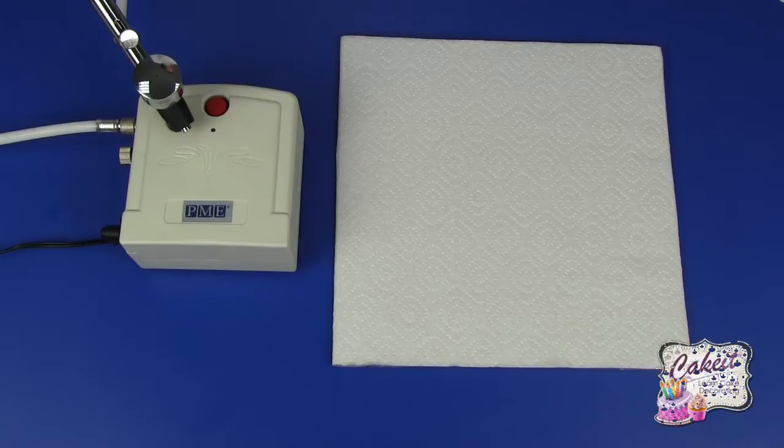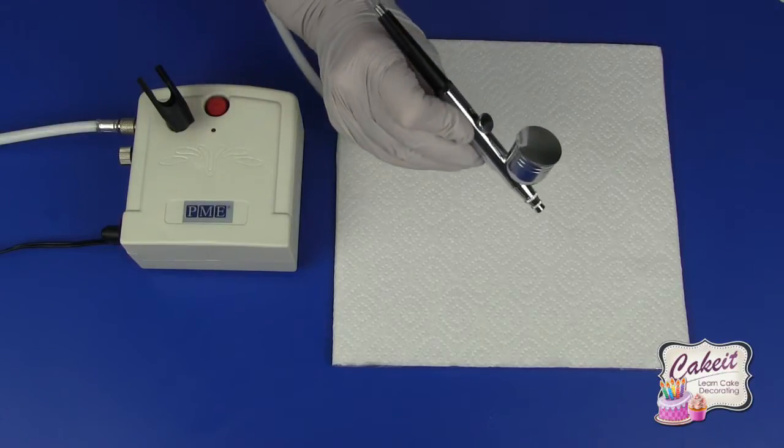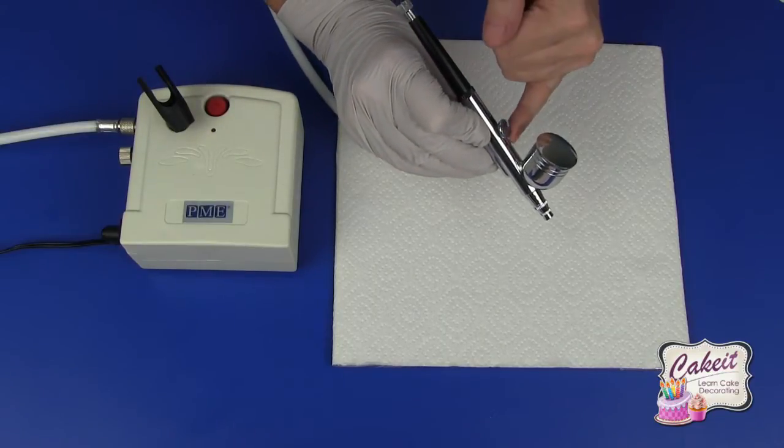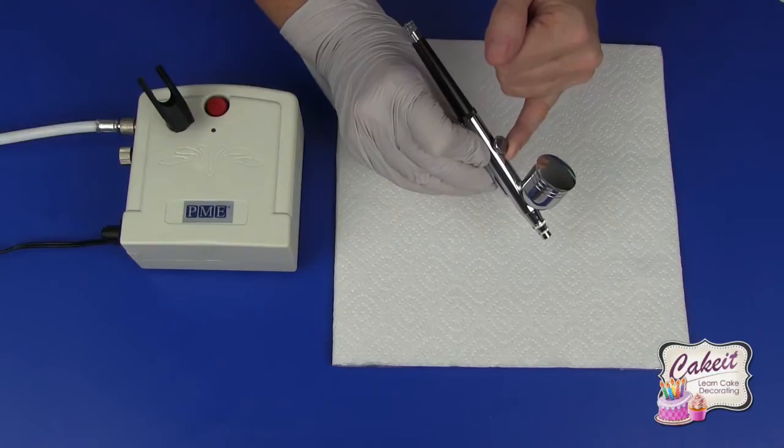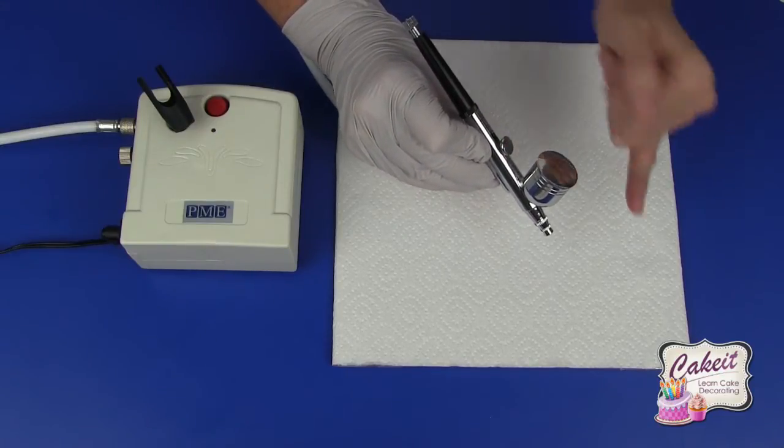Today I'm going to show you how to use the PME airbrush and compressor. First, if we look at the airbrush, this is a single action gravity feed airbrush, which means it has a single action lever to control the airflow and a cup to feed the color to the needle.